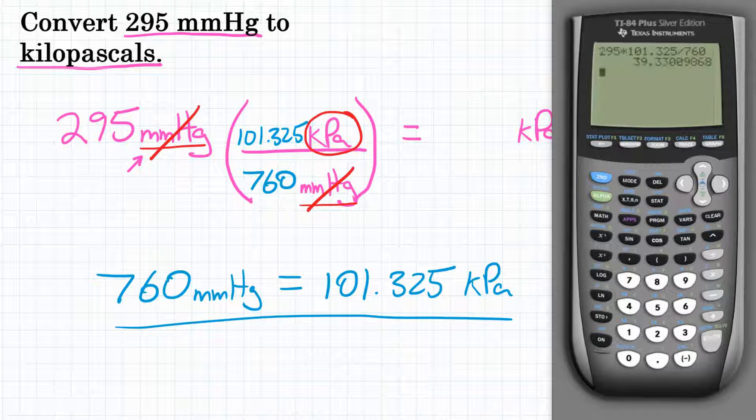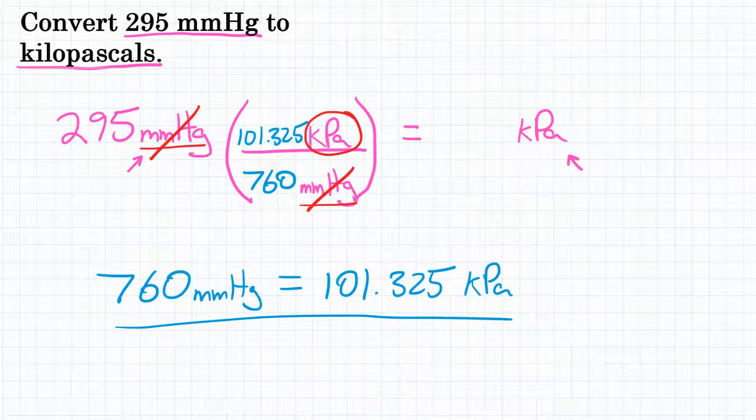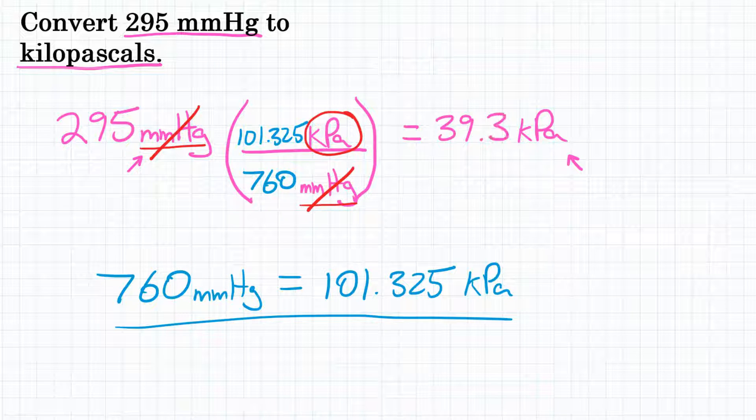Hit equals and our calculator gives us 39.33 and a couple more digits past that. Let's round to three significant figures. So we would get 39.3.